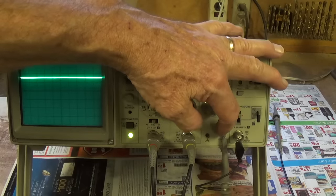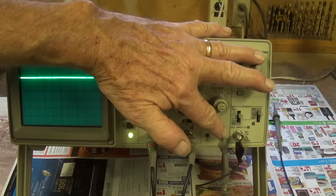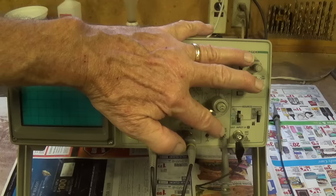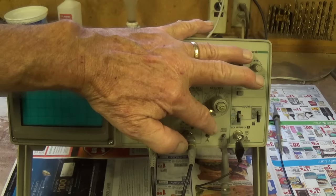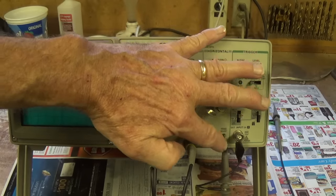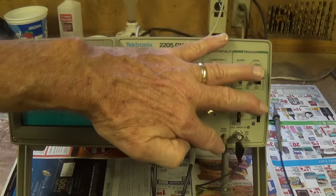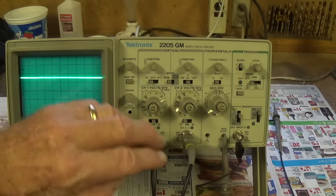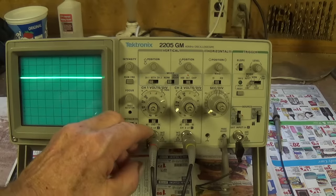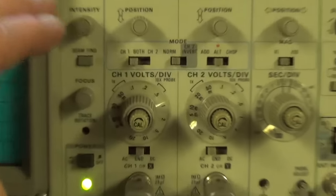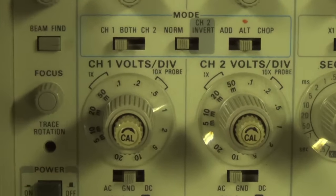Okay. We have the probe for channel one connected right down here to the probe adjust stud and it is receiving from a circuit within the oscilloscope, a square wave, which we're going to use to calibrate our probes. That signal is coming down here and is coming in right here into the oscilloscope. Now, to get the image properly on the screen, we're going to have to make some adjustments.